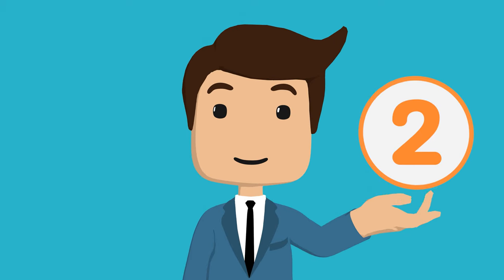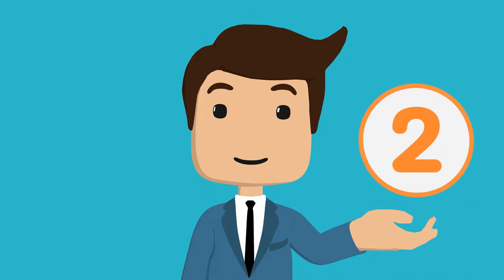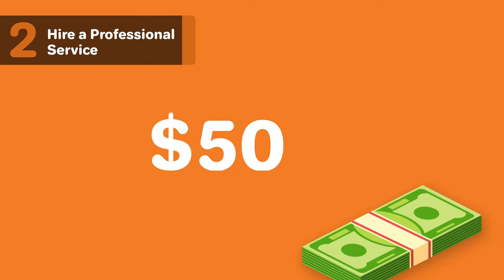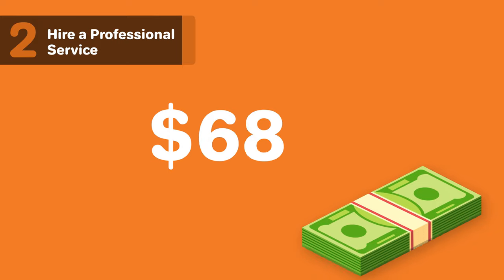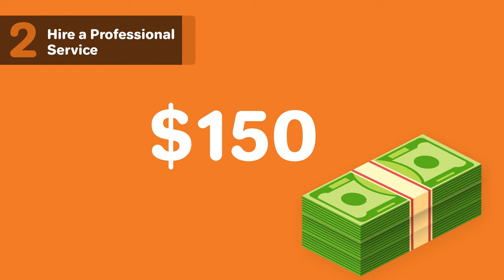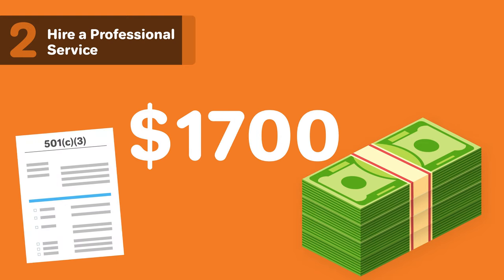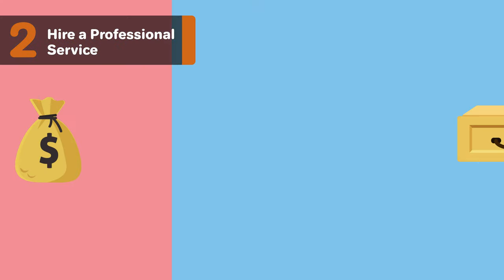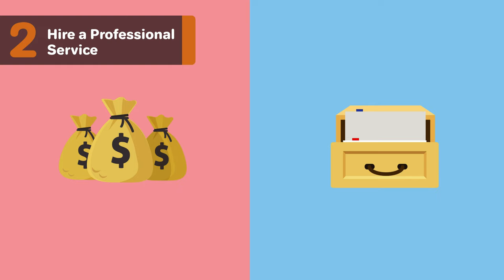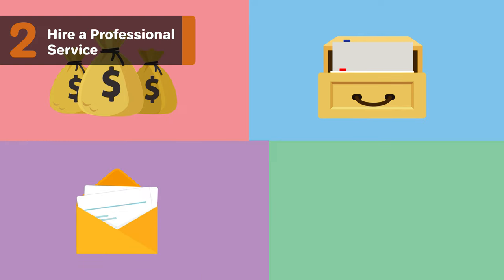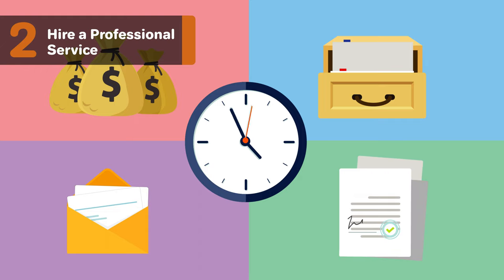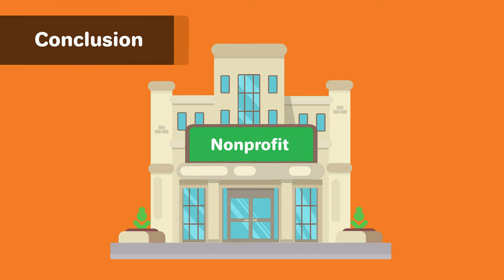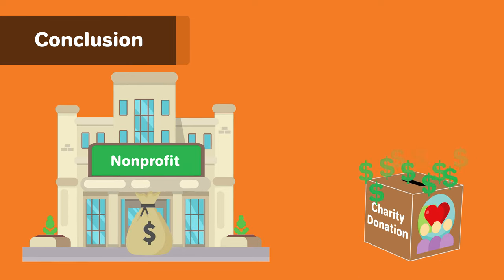Option 2: the second way to form a nonprofit is to hire a professional service to create your nonprofit for you. Hiring a professional service to file your forms and act as your registered agent will cost an additional $50 to $150. This fee only covers formation of a nonprofit corporation. If you wish for the professional service to also file for 501c3 status, the cost may go up to as much as $1,700 plus filing fees. However, there are several benefits to working with a pro: a hired registered agent helps with getting your reports filed on time, helps you stay organized by keeping your business mail separate, and is available at all regular business hours to accept official mail and legal papers on your nonprofit's behalf.